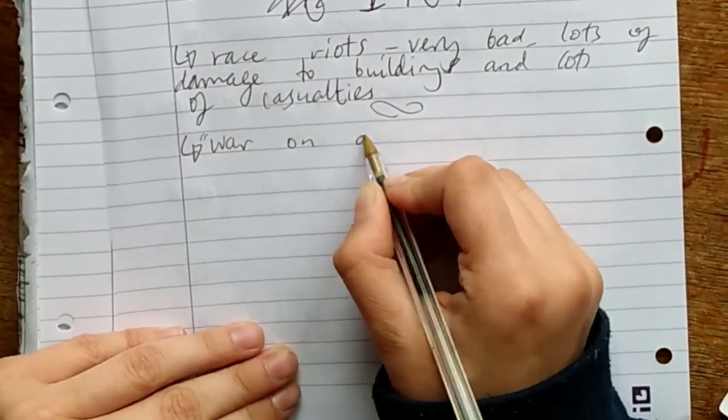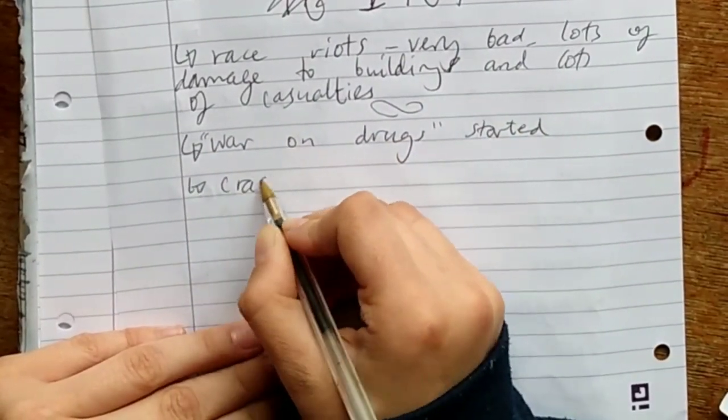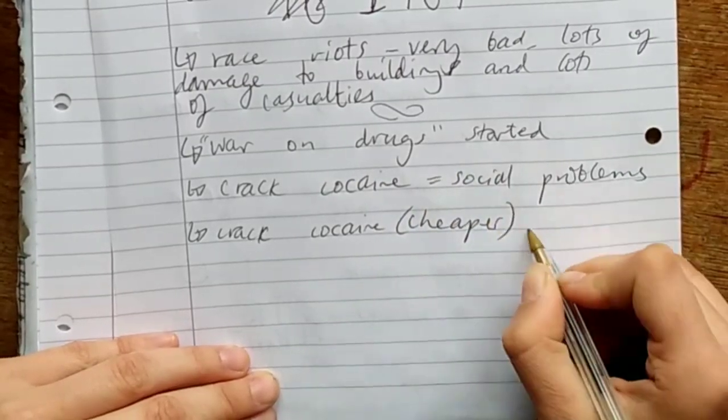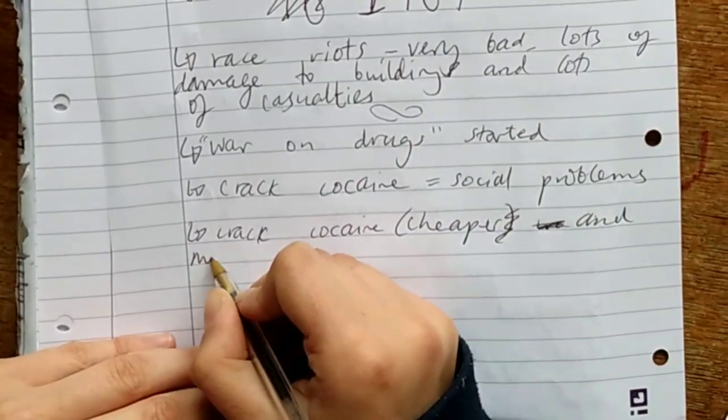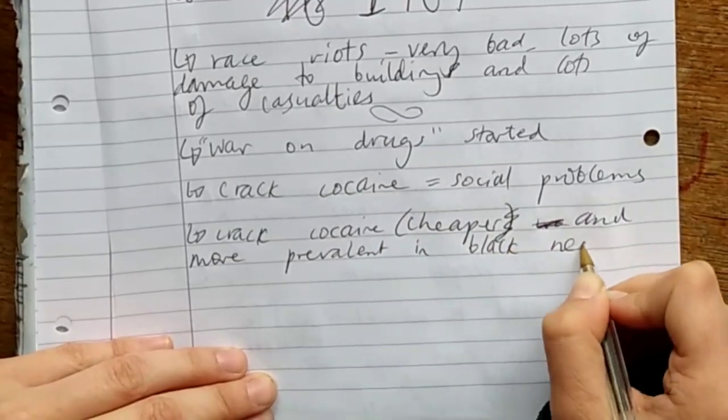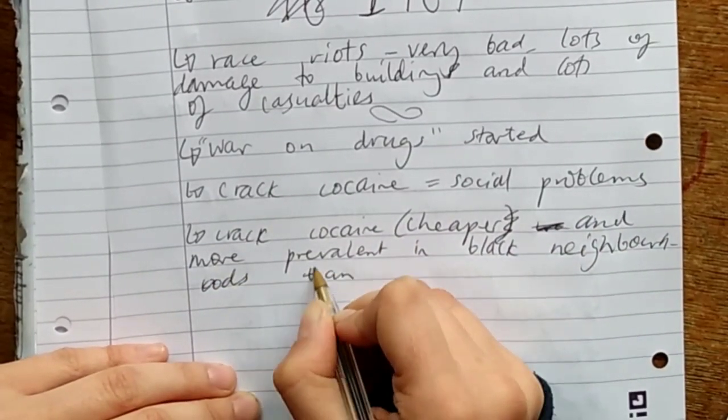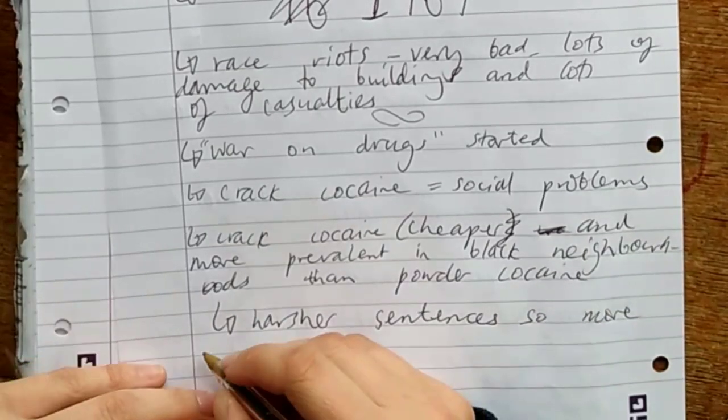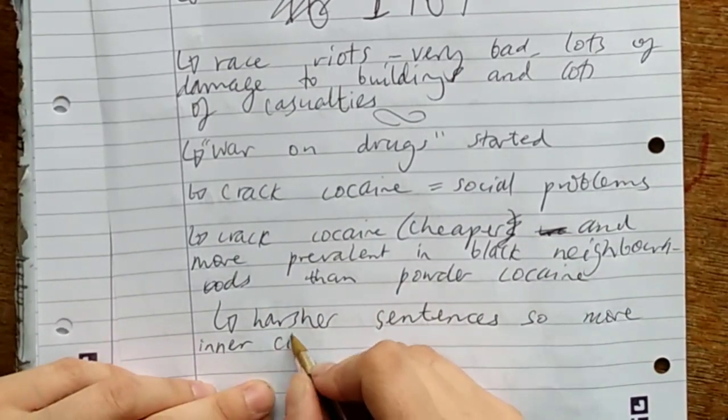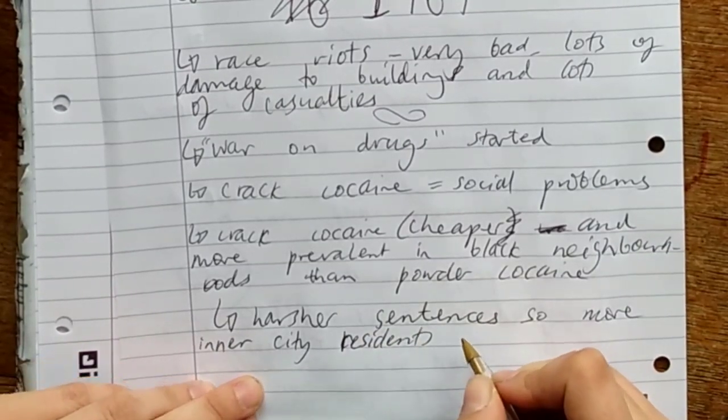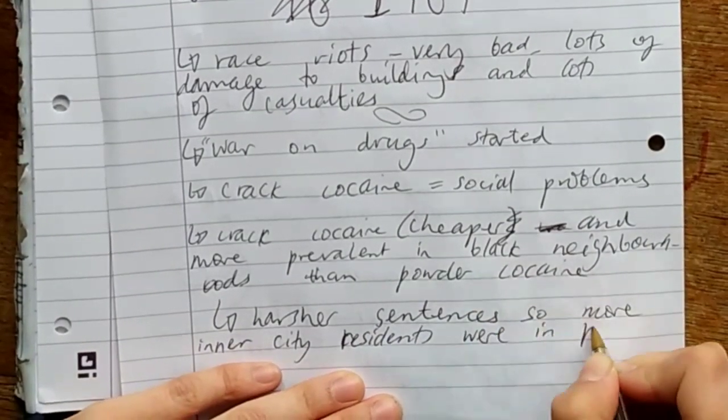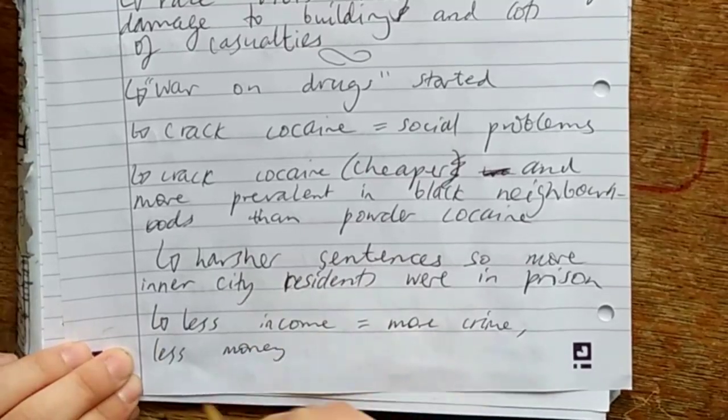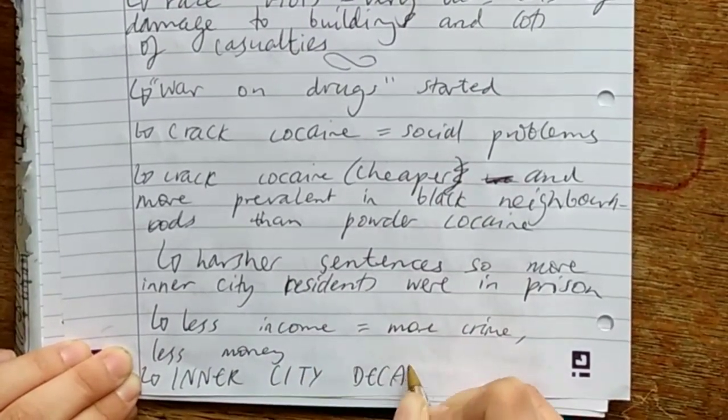Another issue in the 60s was the war on drugs. Crack cocaine was readily available in the 60s, which led to social problems. Crack cocaine was also cheaper and more available in inner city black neighbourhoods than powder cocaine. The national government at the time was really racist, I mean not that it isn't now, but it made the sentences for dealing crack cocaine a lot higher. More inner city residents who were predominantly black were in prison. Less income was coming into the inner city areas, leading to even more social decline and more crime. That just exacerbated the inner city decay.